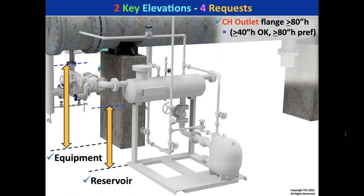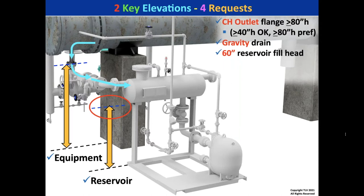We must gravity drain into the reservoir, and we want that blue line at the bottom of the reservoir to be 60 inches above the reboiler outlet to minimize the number of pump traps installed. We can work as low as 30 inches, but 60 inches is preferred to minimize the pump traps used.